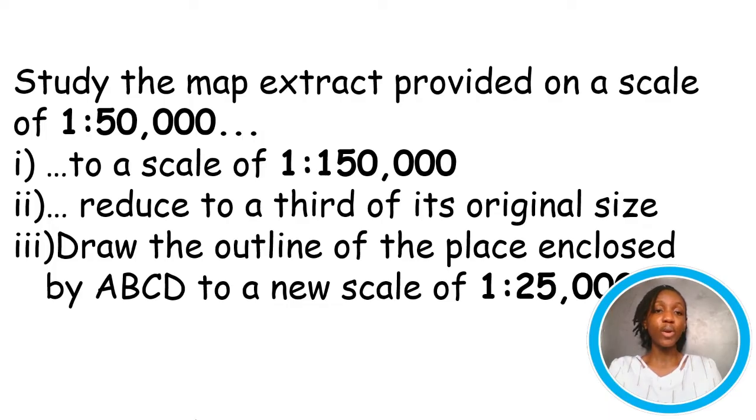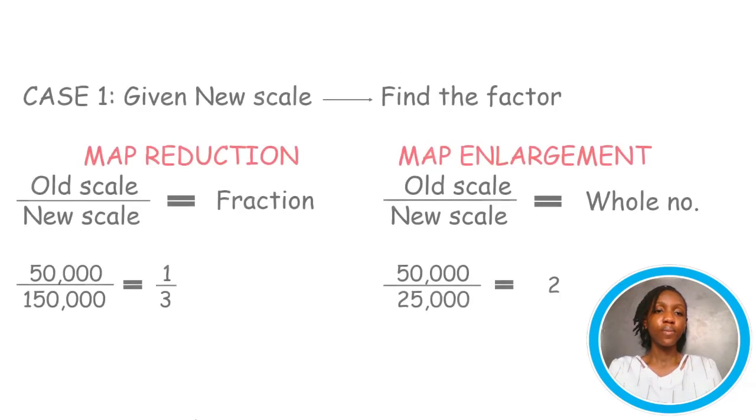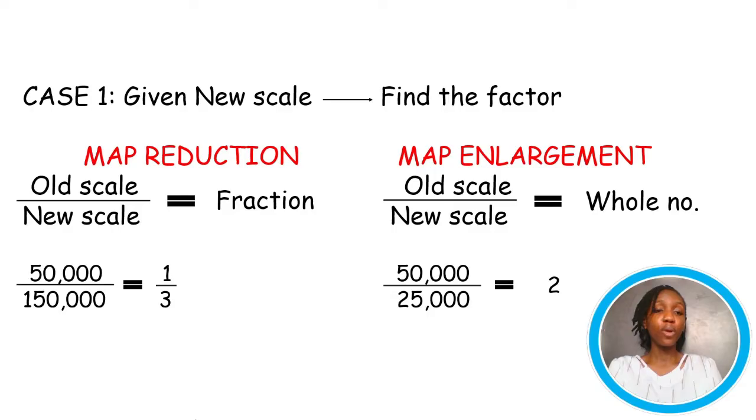So, now let's take questions one and three. Since we already have the old scale given to us as one ratio 50,000. So, now remembering the formula, O over N, the old scale 50,000 divided by the new scale 150,000 gives us 1 over 3. And the old scale 50,000 divided by the new scale 25,000 gives us 2. On dividing, we have 1 over 3 as a fraction indicating reduction and 2 indicating that the map is to be enlarged by a factor of 2. As you can see, when dividing, we ignore the number 1 in the scale.